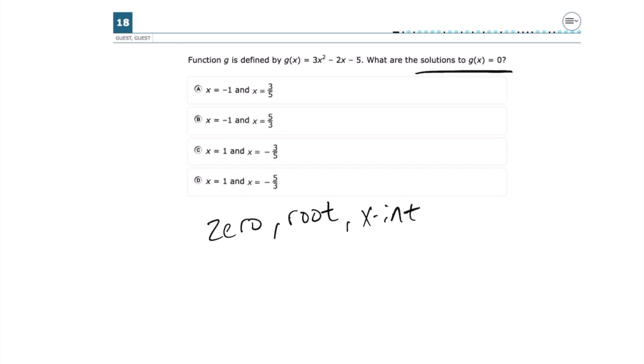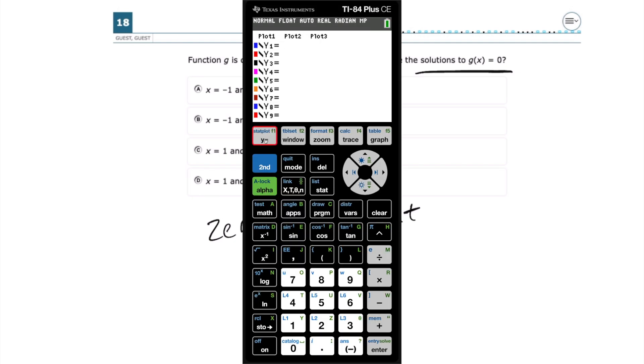So what I'm going to do is I'm going to take this and go to my graphing calculator and we're going to type in our function in y equals. So in y equals, we're going to type 3x squared minus 2x minus 5. And then we're just going to hit graph.